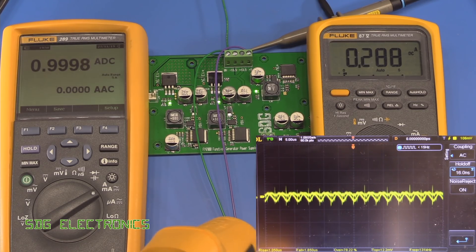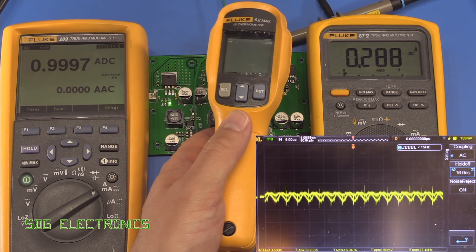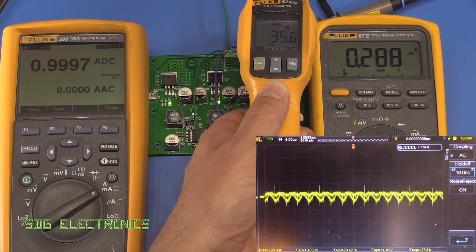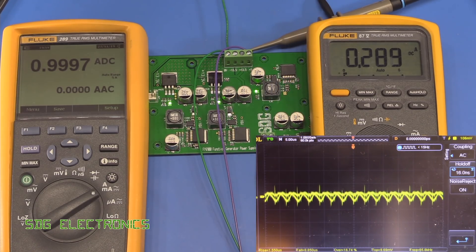We'll just see if anything's getting hot. If anything it'll be the diode. I do really need a thermal camera of some kind. Yeah, about 35 is about as high as it's going. So that all looks okay. Let's switch over to the positive 13 and a half volt rail.